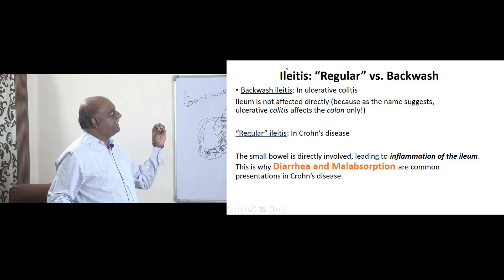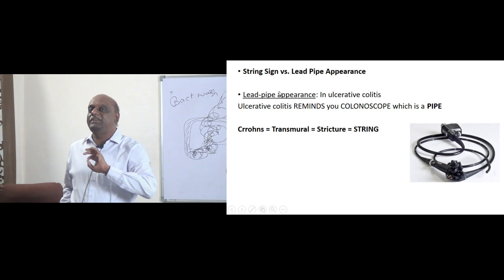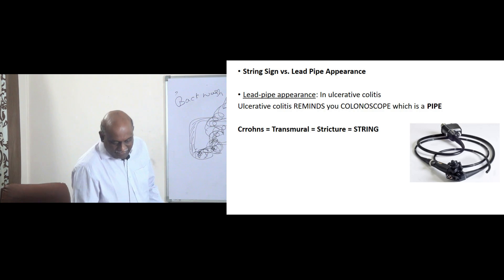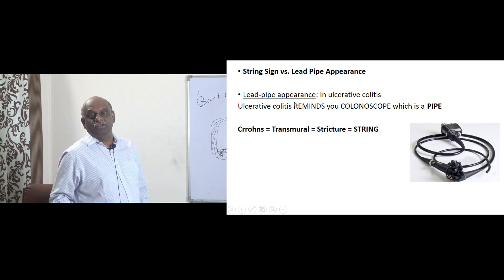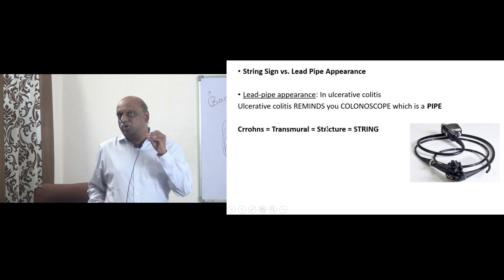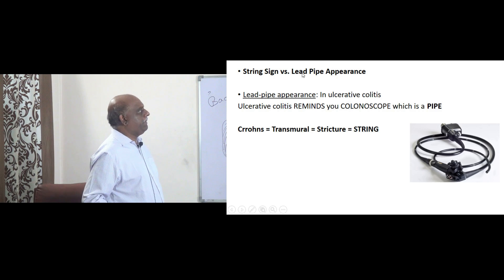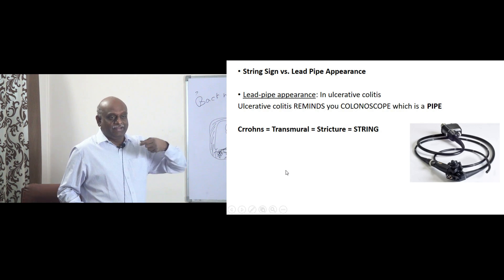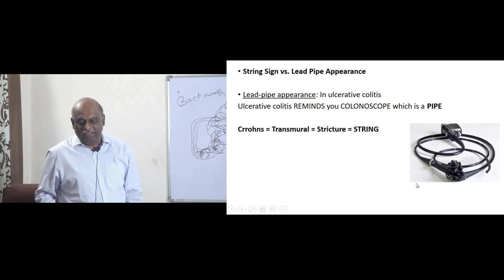The next important difference the examiner wants to know between these two is: where do you have lead pipe appearance, and where do you have string sign of Cantor, radiologically. In ulcerative colitis, we have lead pipe appearance. How will you remember it? Ulcerative colitis reminds you of colon, colon reminds you of colonoscope, colonoscope reminds you of a pipe — so lead pipe is what you see in ulcerative colitis. Whereas in Crohn's, it is transmural inflammation leading to stricture — it becomes like a string. So string sign is seen in Crohn's, lead pipe in ulcerative colitis.